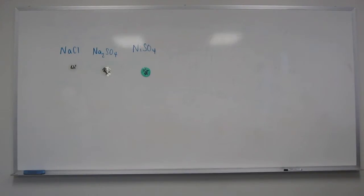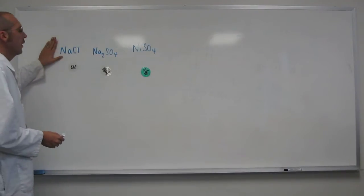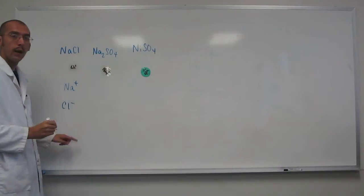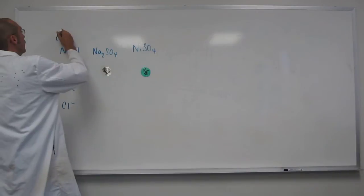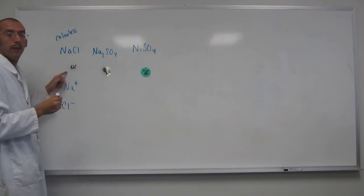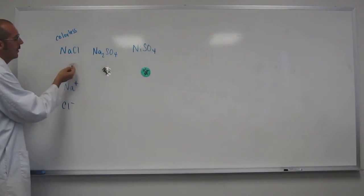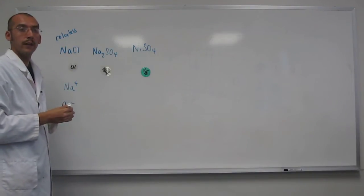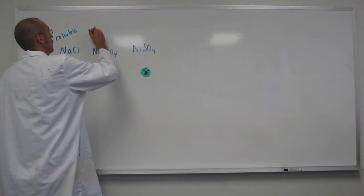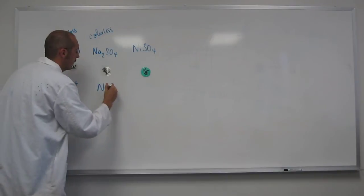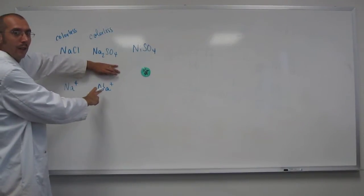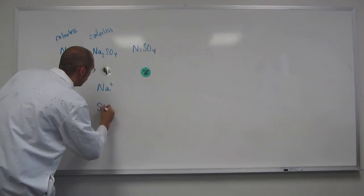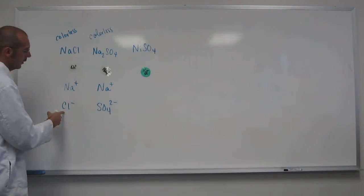What color would you predict for nickel chloride? So what we're saying here is: I know that sodium chloride is composed of these two ions — sodium plus and chloride minus. So if this compound is colorless, then both of those ions must be colorless. So we have a Na⁺ ion and a Cl⁻ ion, both colorless. It also says that sodium sulfate is colorless, and we know sodium is colorless. So if sodium's colorless and the whole compound is colorless, then sulfate must be colorless too. So we've got colorless, colorless, colorless, colorless.